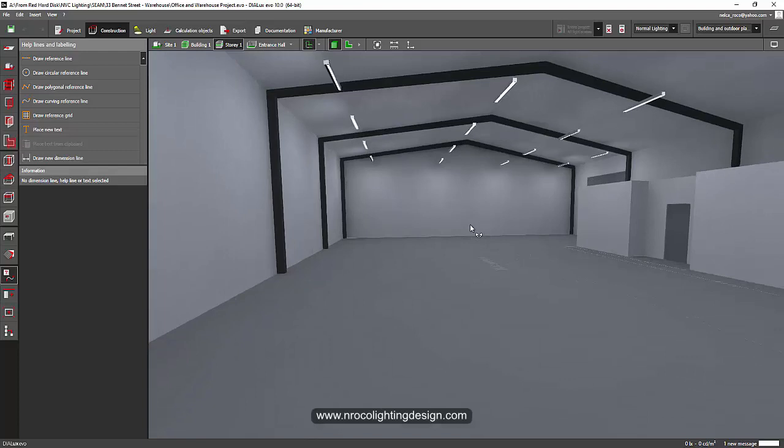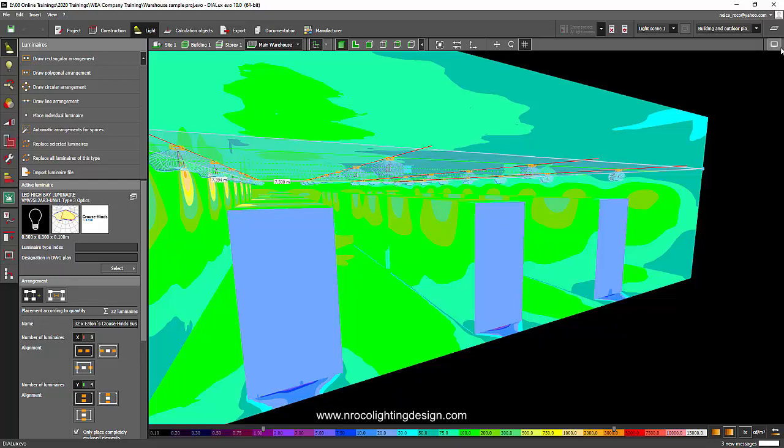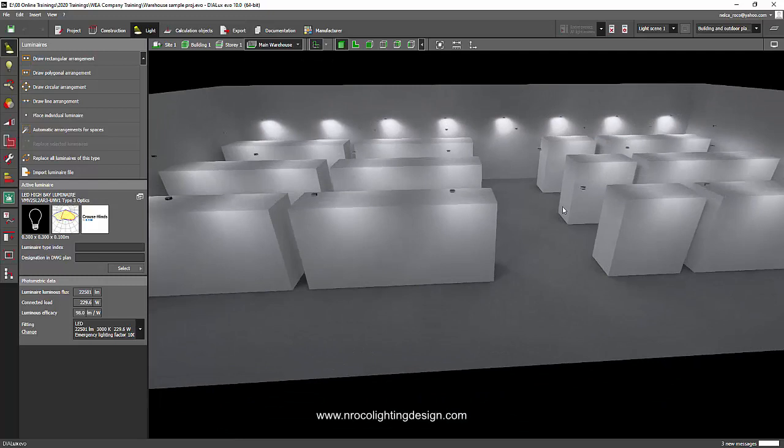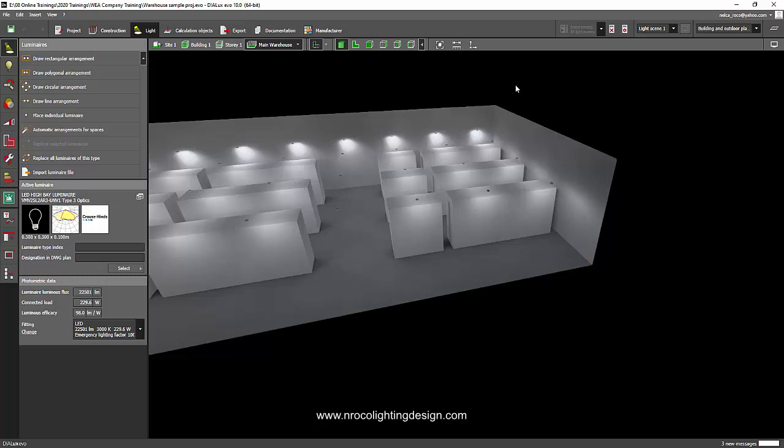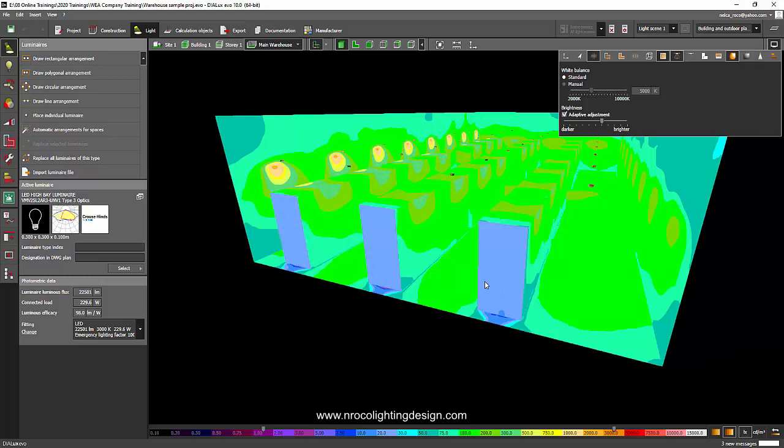But for this warehouse that has lots of racks, we need to double check. You can do it by checking the false color or you can create calculation surface on every rack. We need to check those lights bouncing or touching the racks on the vertical.